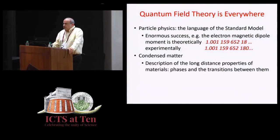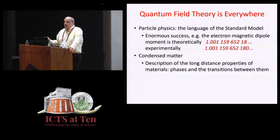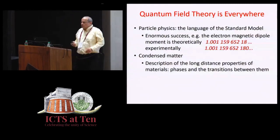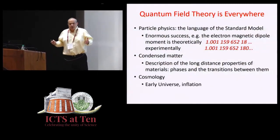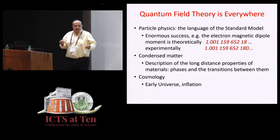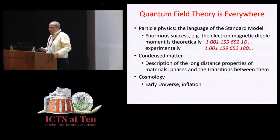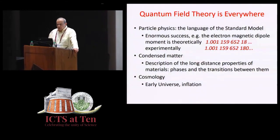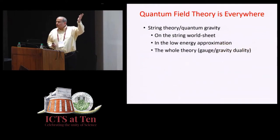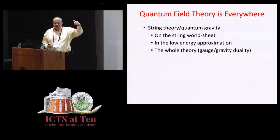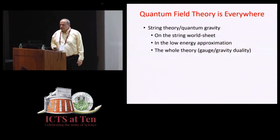The second application is in condensed matter physics, and we've heard about it from the three beautiful talks this morning. Quantum field theory gives us a description of the long-distance properties of materials. What kind of phases can there be? What kind of phase transitions can there be between different phases of matter? And it also appears in cosmology. This is where we have a description of the early universe, inflation, fluctuations in the microwave background radiation. That all comes from quantum field theory.